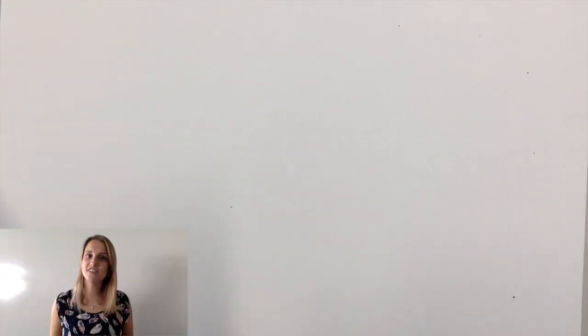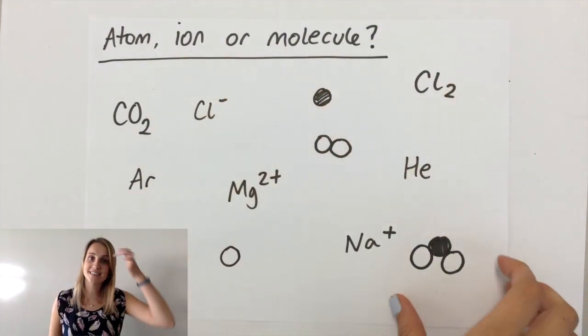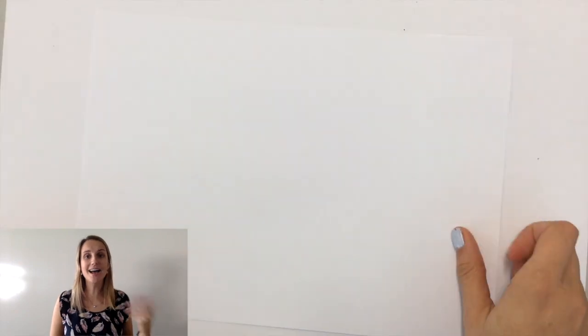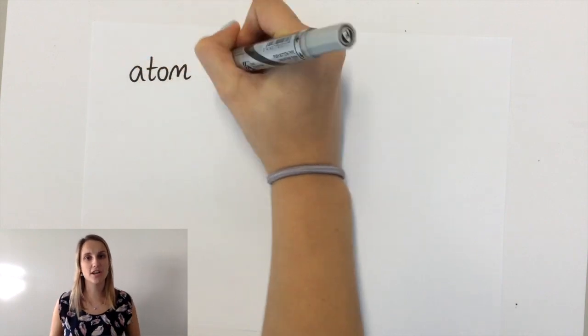By the end of today's video you should be able to look at this collection of drawings and chemical symbols and be able to decide which ones of them are atoms, ions and molecules. So let's get started with atoms first.